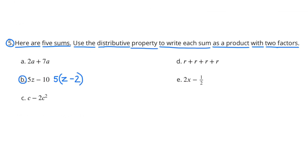B. 5Z minus 10 — the common factor here would be 5. I'm going to pull the 5 out on the outside of the parentheses: 5 times (Z minus 2). Because 5 times Z equals 5Z, and 5 times negative 2 equals negative 10.